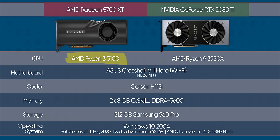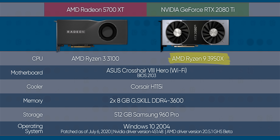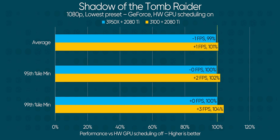We grabbed a Ryzen 3 3100 to test a low thread count CPU, a Ryzen 9 3950X to test a high thread count CPU, a GeForce RTX 2080 Ti to test a high-end NVIDIA GPU, and a Radeon RX 5700 XT to test a high-end AMD GPU. In theory, this covers all our bases, since it's ultimately going to be the CPU that's going to be the bottleneck here. Let's start with the NVIDIA graphics card.